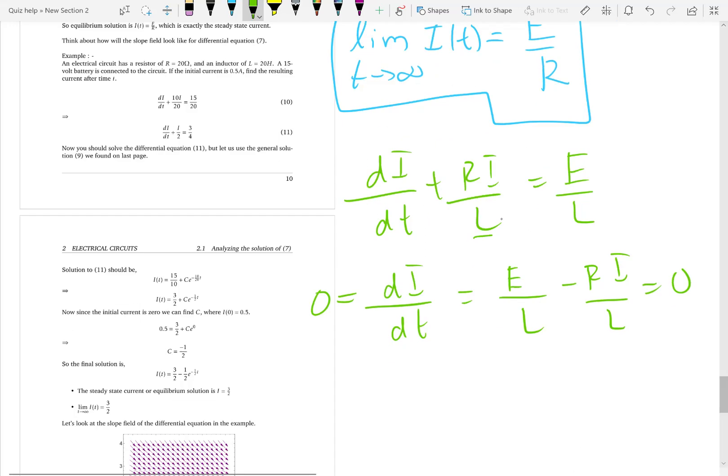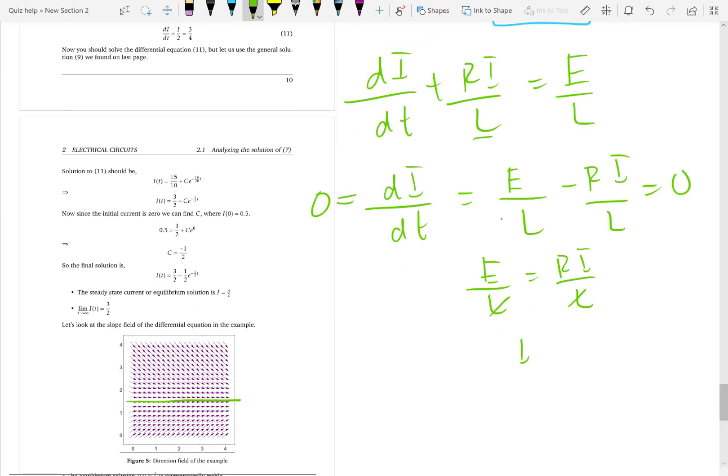When you make it equal to zero, we can see e/L is equal to rI/L. L cancels out. So, I is actually e/r.